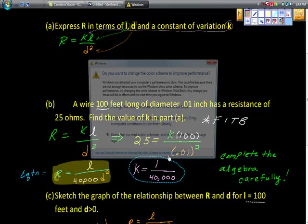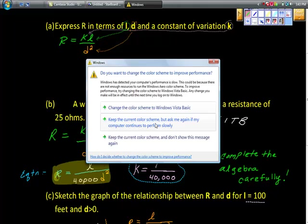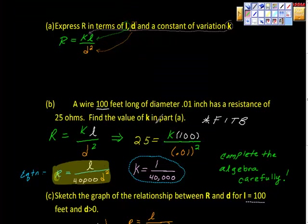I didn't do all this algebra for you. So I just want to remind you to complete this algebra carefully. Just take your time. Remember here that one way to do this would be to actually just cross-multiply here. Anyway, when everything gets simplified out, you'll get that the value K is equal to 1 over 40,000.